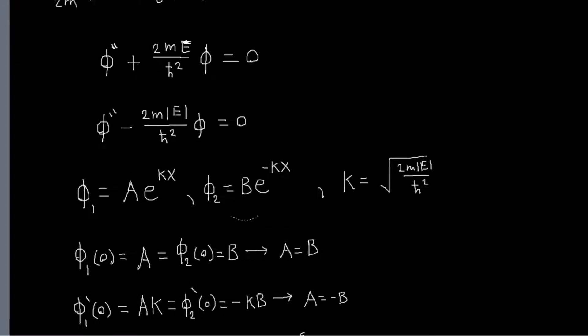And then the second boundary condition is that the derivative of our wave function should be continuous at zero. But that tells us that A is equal to minus B. And that's kind of a weird thing, because the only solutions to these two constraints is that both A and B are zero, which is a trivial solution. We don't really care about that.